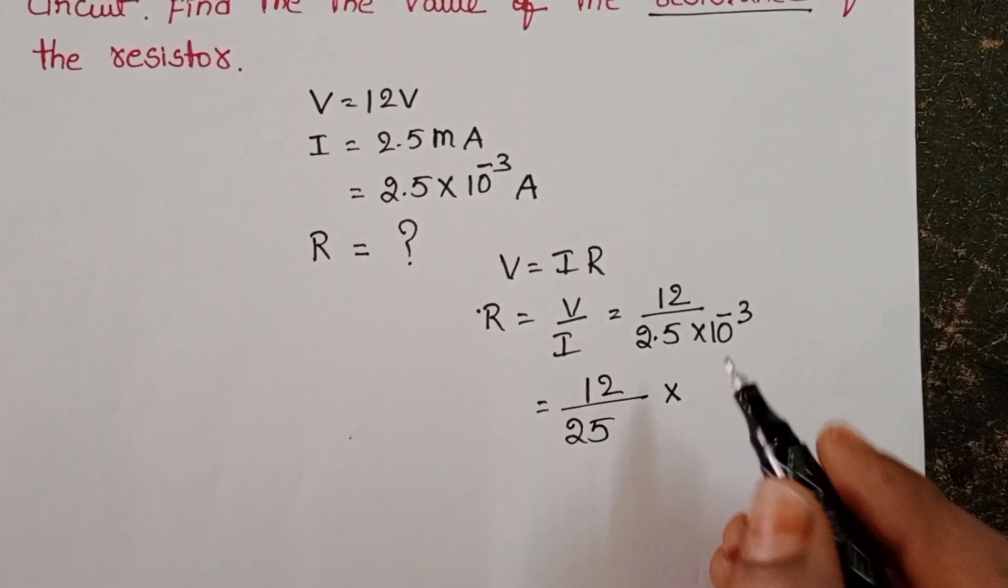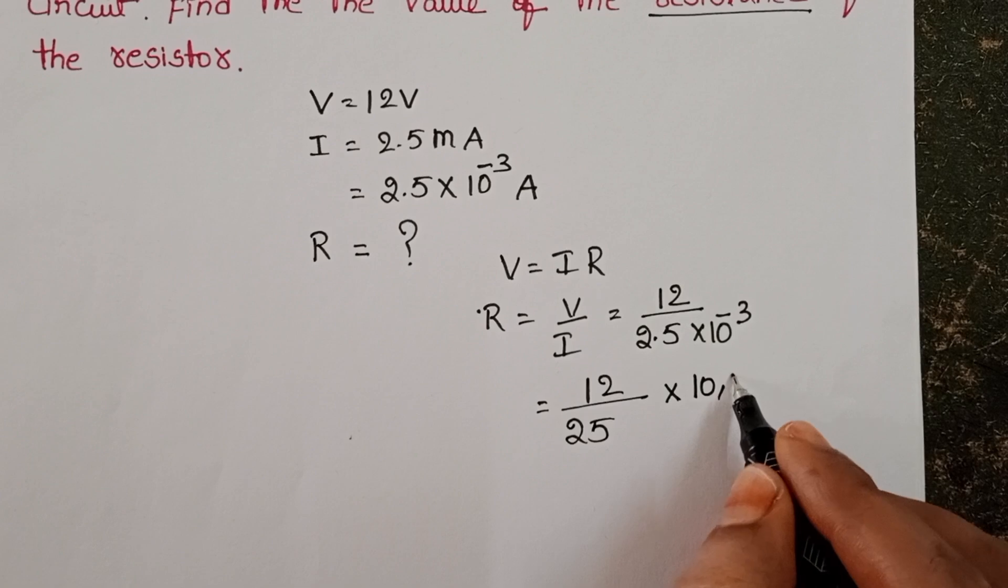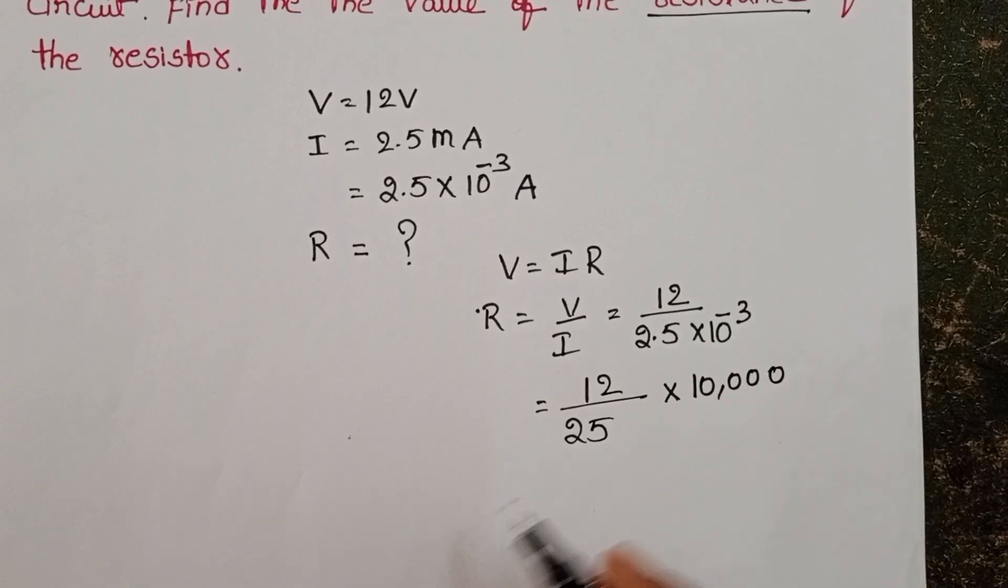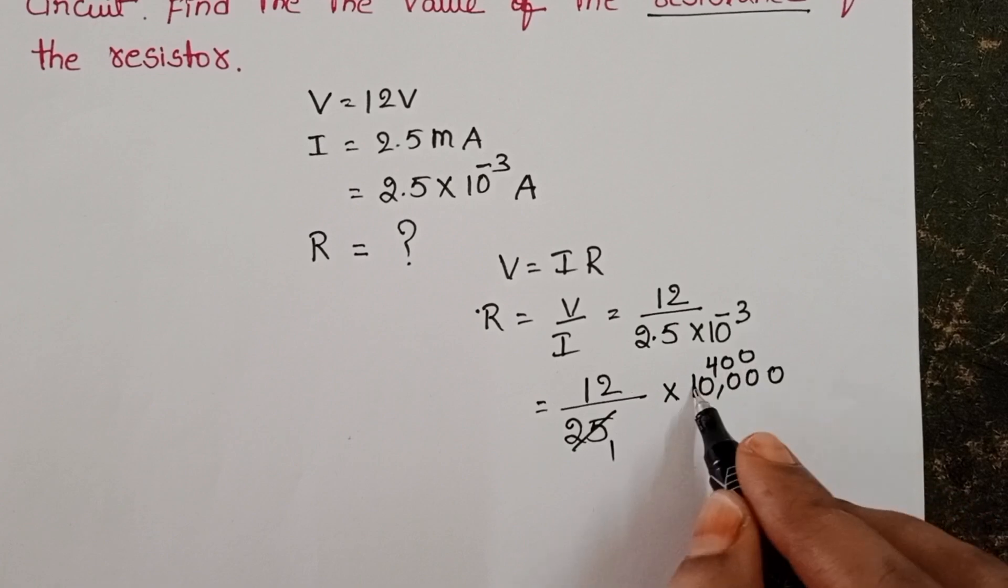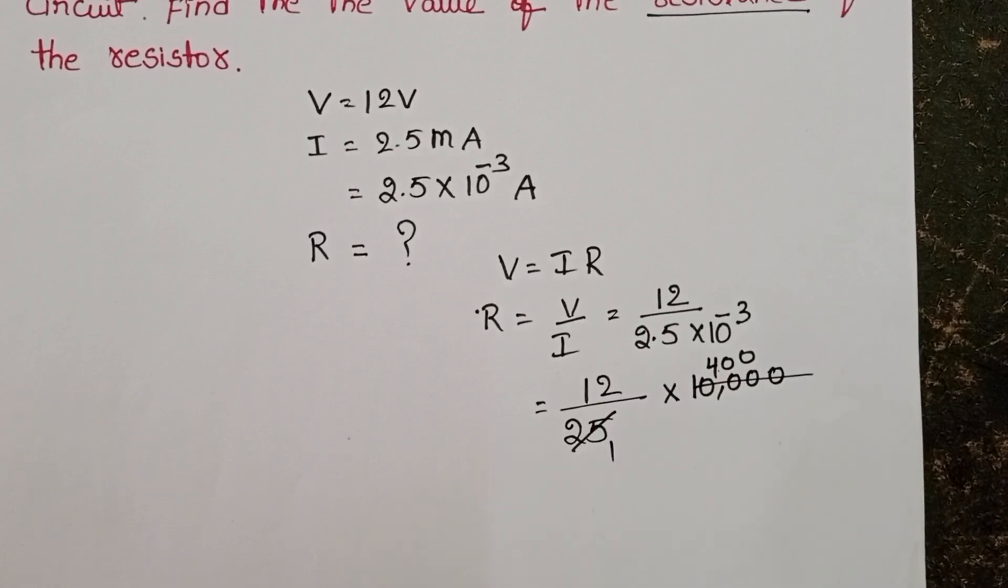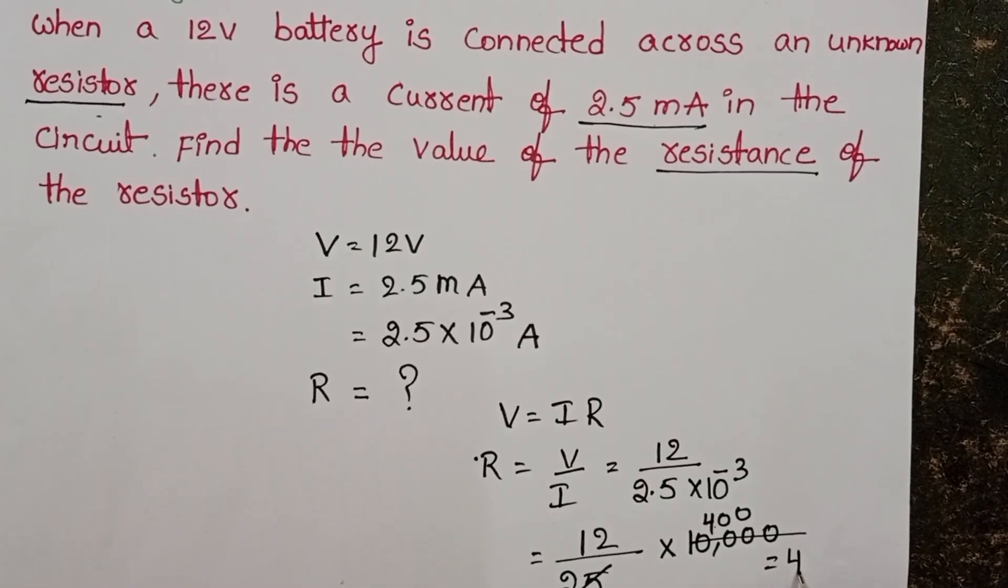10 power minus 4 goes to numerator, it becomes 10,000. 25 once, 25 fours 100, take 2 zeros. 400 into 12 is 4800 ohms.